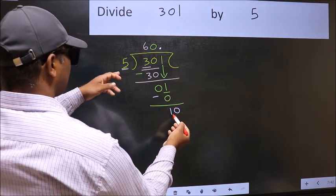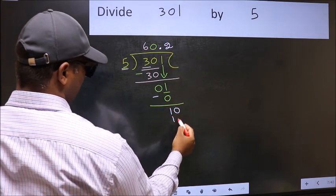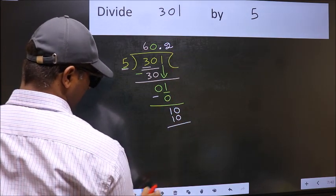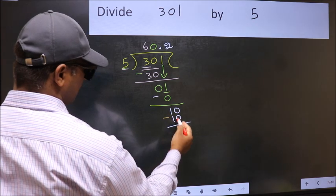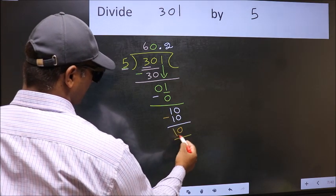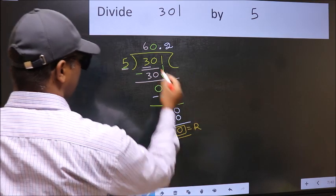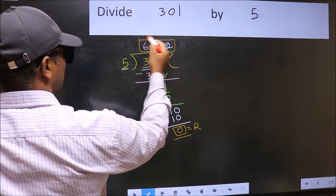When do we get 10 in 5 table? 5 times 2 is 10. Now you should subtract. 10 minus 10, 0. This is our remainder, and this is our quotient.